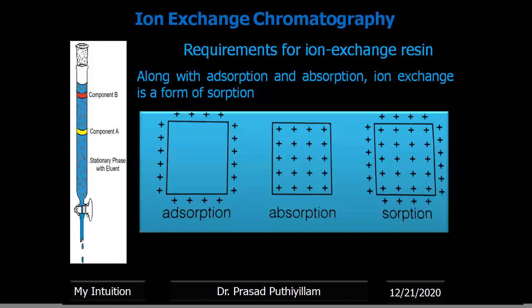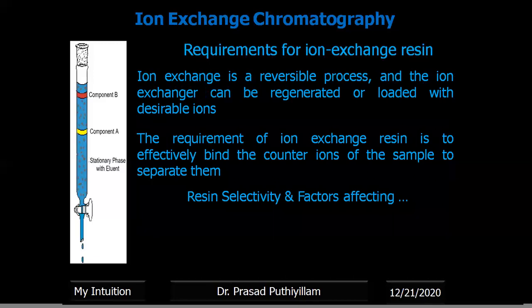Ion exchange in a resin is a reversible process and the ion exchanger can be regenerated or loaded with desirable ions. The requirement of an ion exchange resin is to effectively bind the counter ions of the sample in order to separate them. This mainly depends on the selectivity of the resin. We must select a suitable ion exchange resin based on the components in the mixture that we want to separate individually. The factors affecting selectivity will be explained in detail in coming classes.